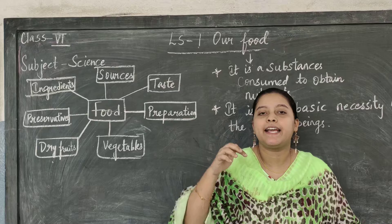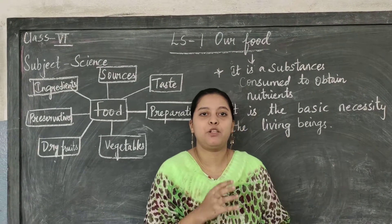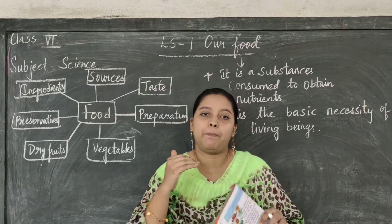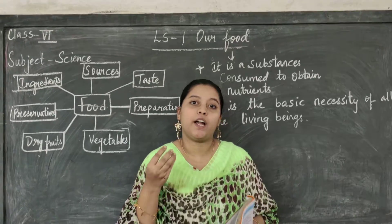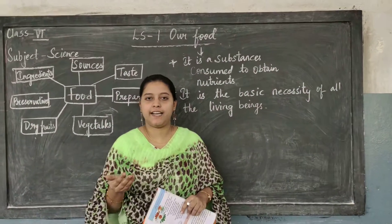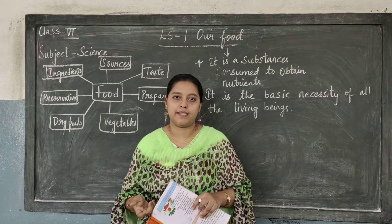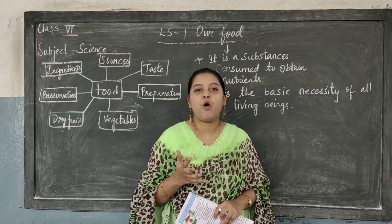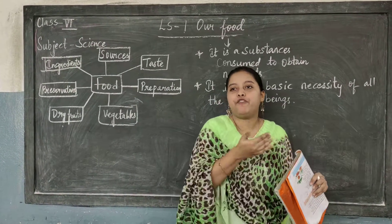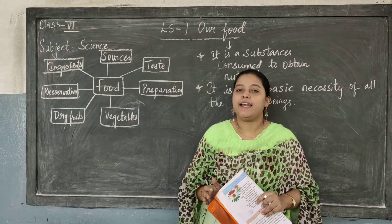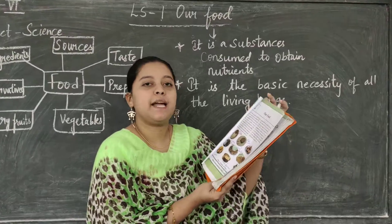You will learn what type of ingredients are used for preparing different dishes. For example, for preparing biryani, chutneys, or raita — what items are being used? We cannot add sugar to biryani, and we cannot add salt to raita. So it is important for you all to know what ingredients are being used for preparing different food items.